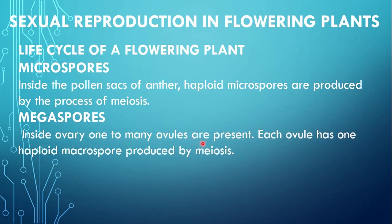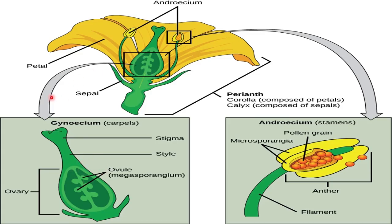Next are the megaspores. Inside the ovary, one to many ovules are present. Each ovule has one haploid macrospore that is produced by meiosis. It's a diagram of the female part of the flower, called carpel or pistil. Iske three parts hote hain: topmost part called stigma, then neck-like portion called style, and this swollen portion called ovary. Ovary ke andar one to many ovules present hote hain. Har ovule ke andar meiosis ke process ke through haploid macrospores bante hain, jo ke female gametophyte ko banate hain.